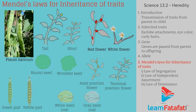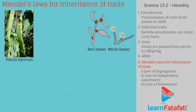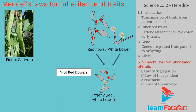He took pea plants having different characteristics, such as a pea plant having red flowers and a plant having white flowers. He then produced the next generation of pea plants — the progeny — from these plants, and calculated the percentage of plants having red or white flowers.